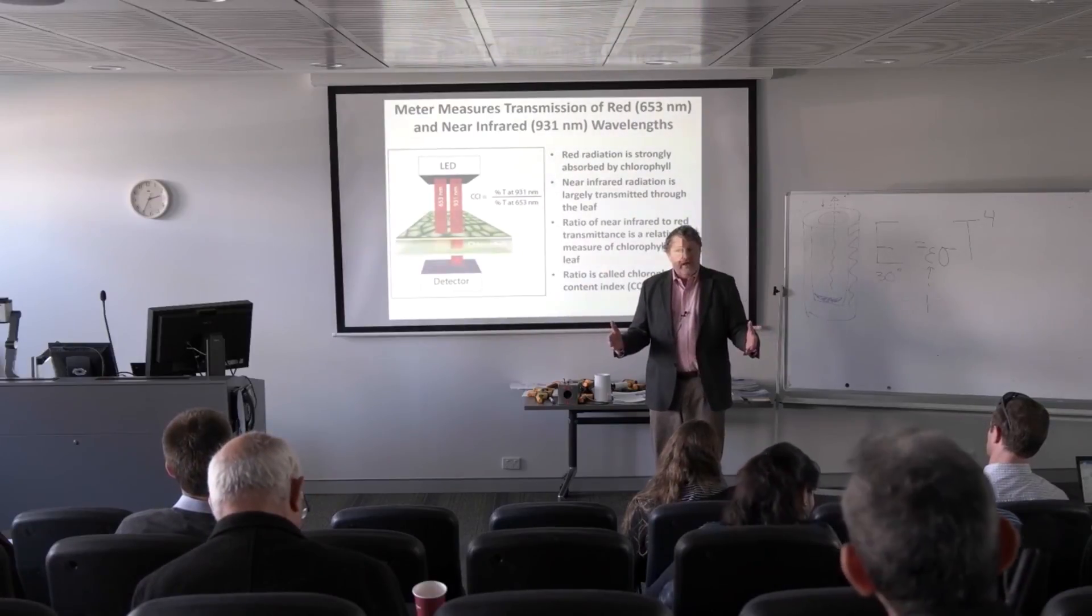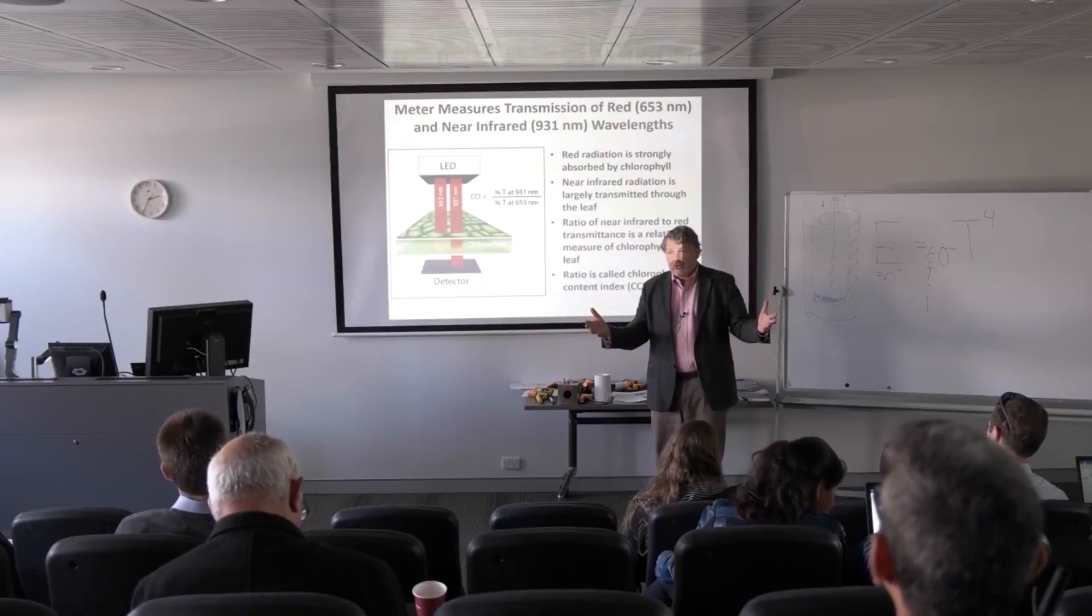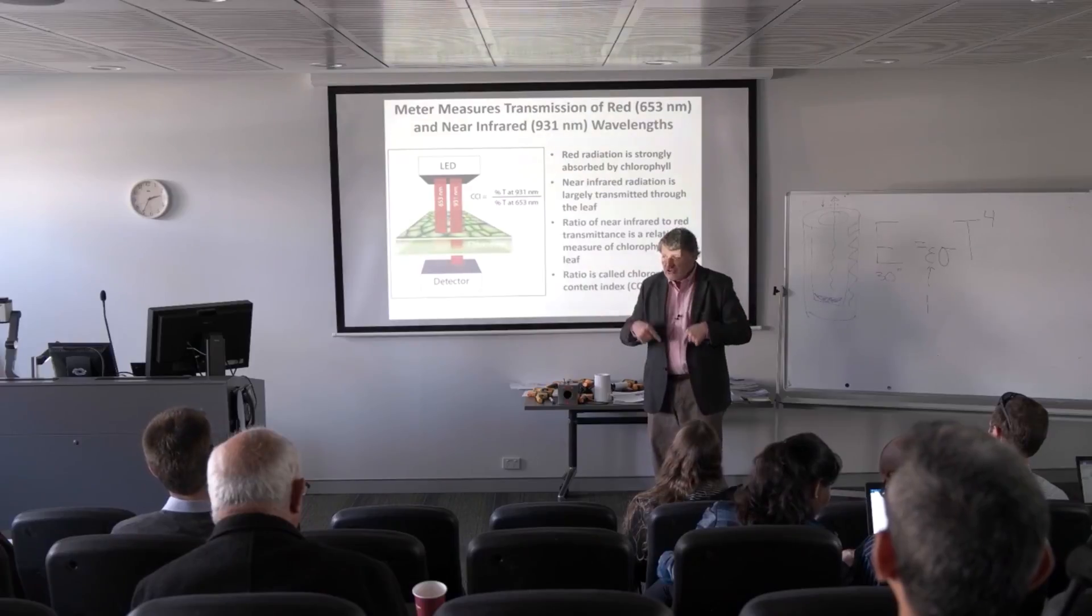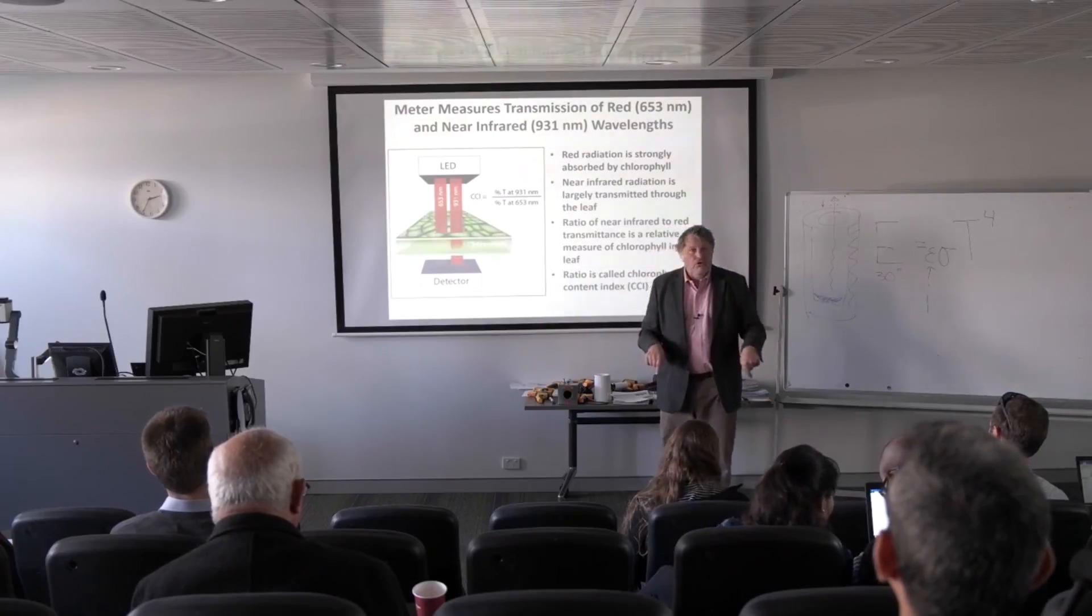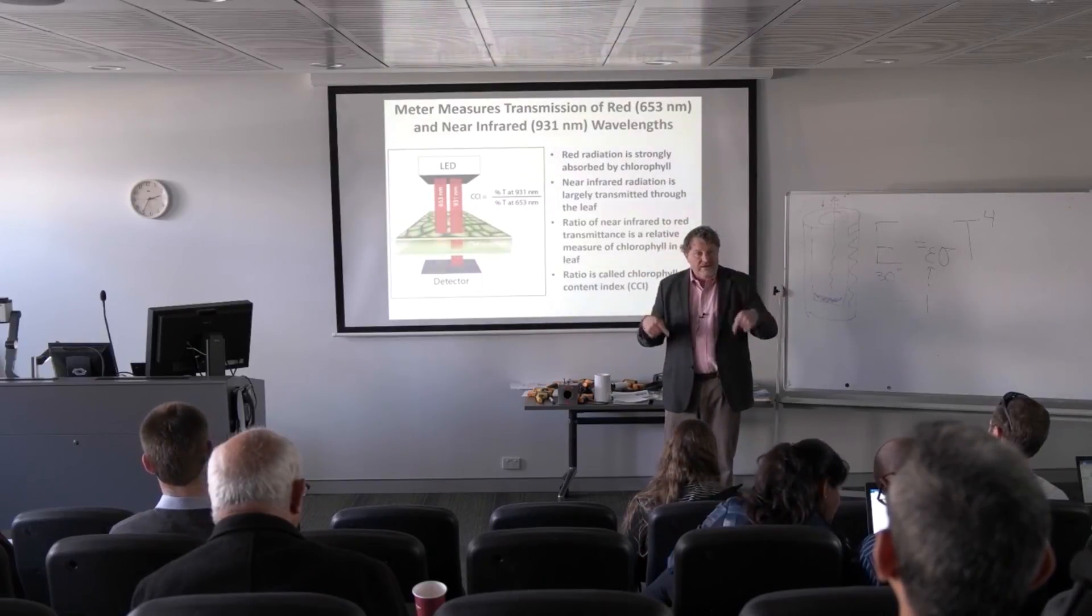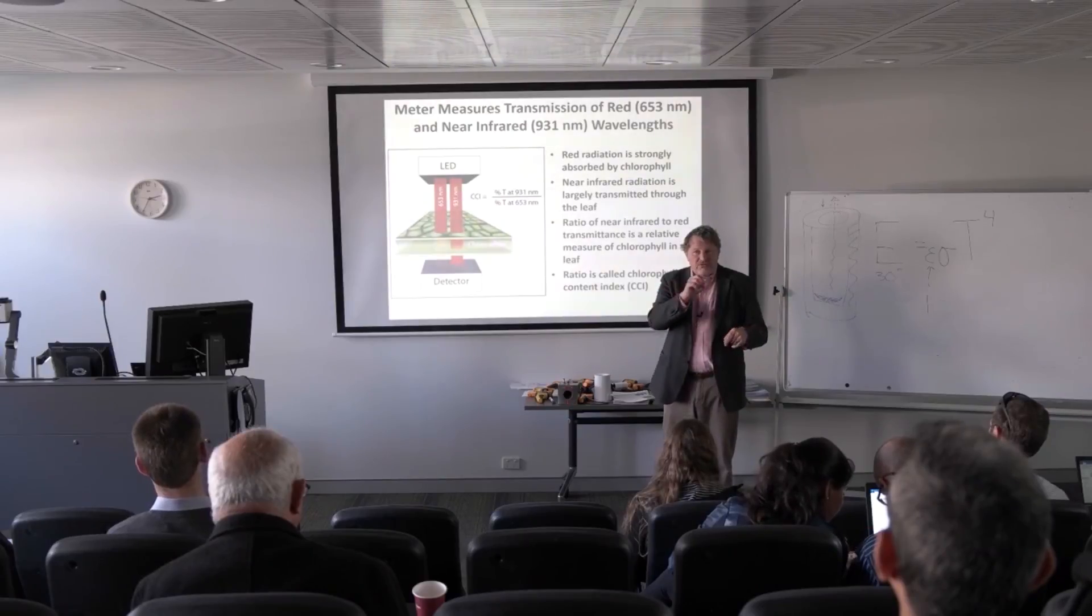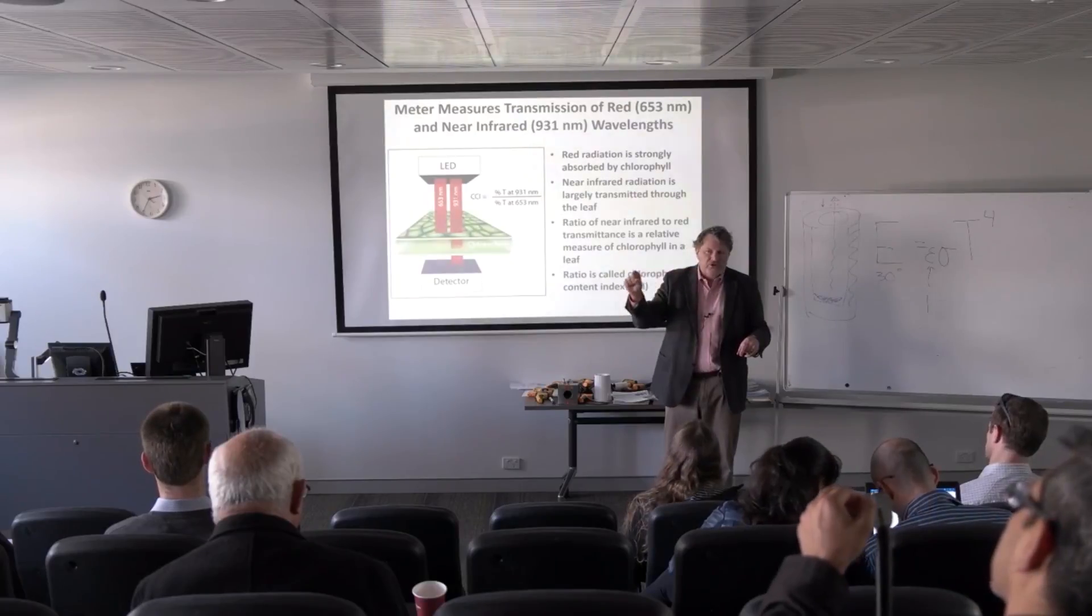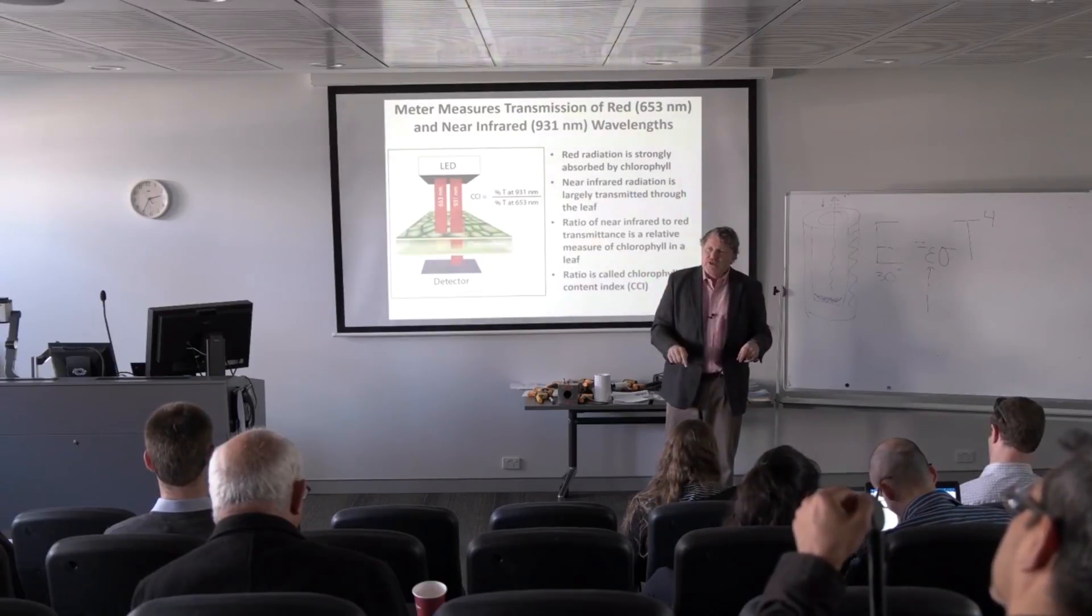We could relate the transmission of red light to the amount of chlorophyll. But cell walls and all the cellulose in a leaf also absorb light. A leaf with not too much chlorophyll, but thick and a lot of cell wall material, would not transmit light.